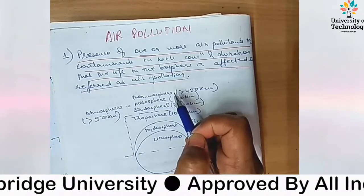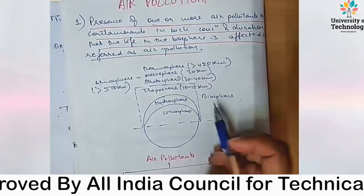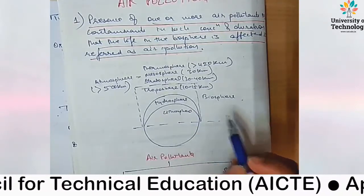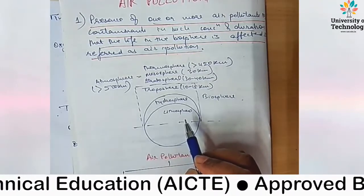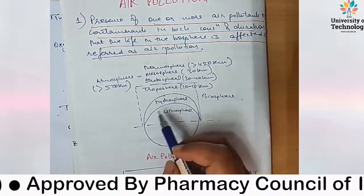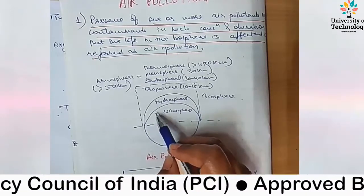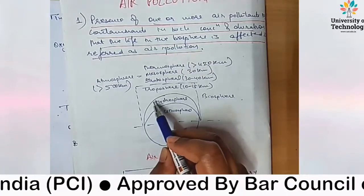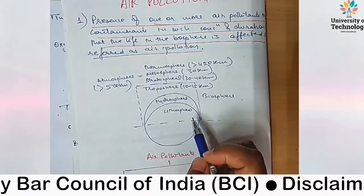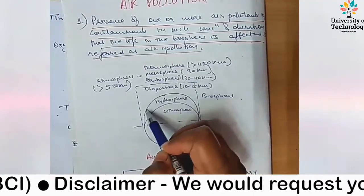To further study the various air pollutants, let's study the various layers around the earth's surface. As we see, this is the atmosphere. The first layer is the lithosphere, which is basically the crust of the earth. Then there is the hydrosphere, which is the water surrounding the earth — oceans and rivers.